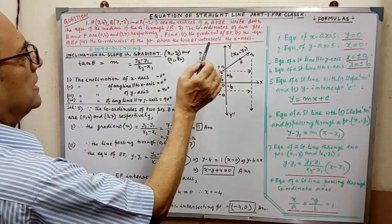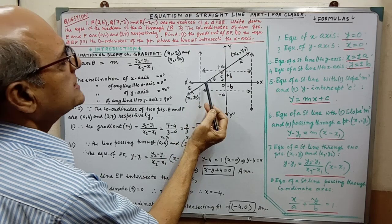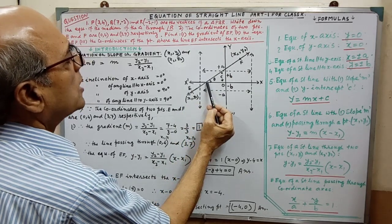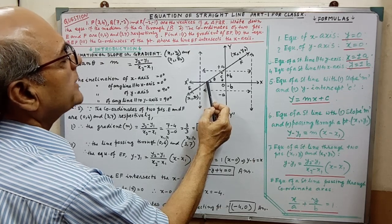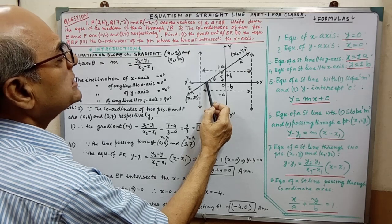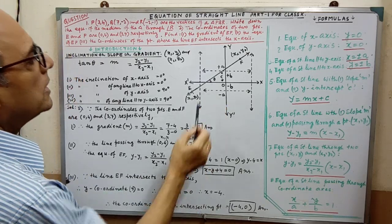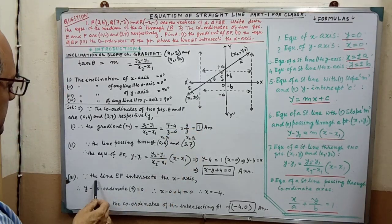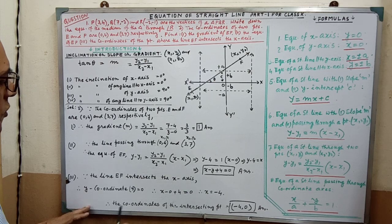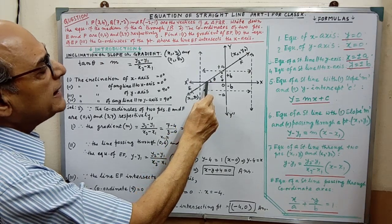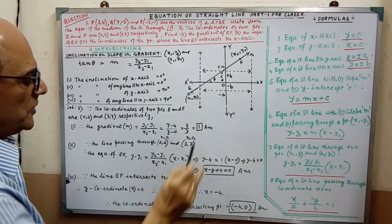The last part: find the coordinates of the point where line EF intersects the x-axis. Since the point of intersection lies on the x-axis, the y-coordinate is 0. We already have the equation of the line EF.